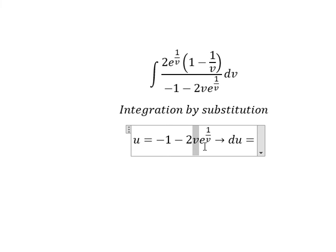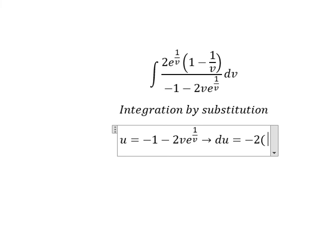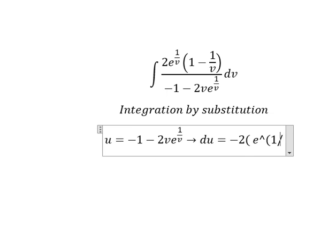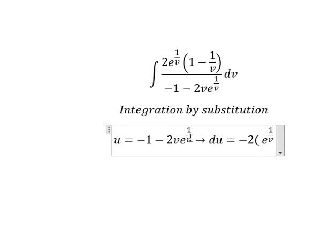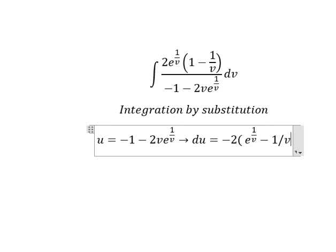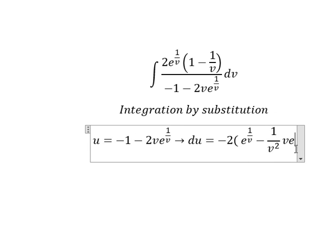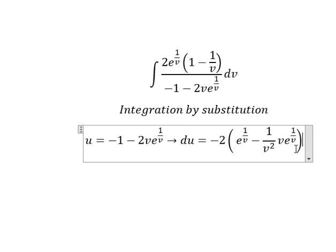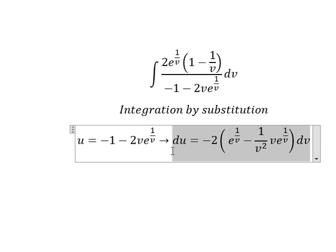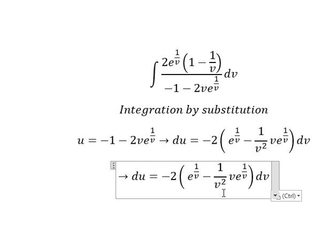For this term we need to take the first derivative, and we can use the product rule. I will put negative two here. The first derivative of v gives number one, so we have e to the power of one over v. Then the first derivative of one over v gives negative one over v squared. So we have v times e to the power of one over v dv. Simplifying, we get one over v.